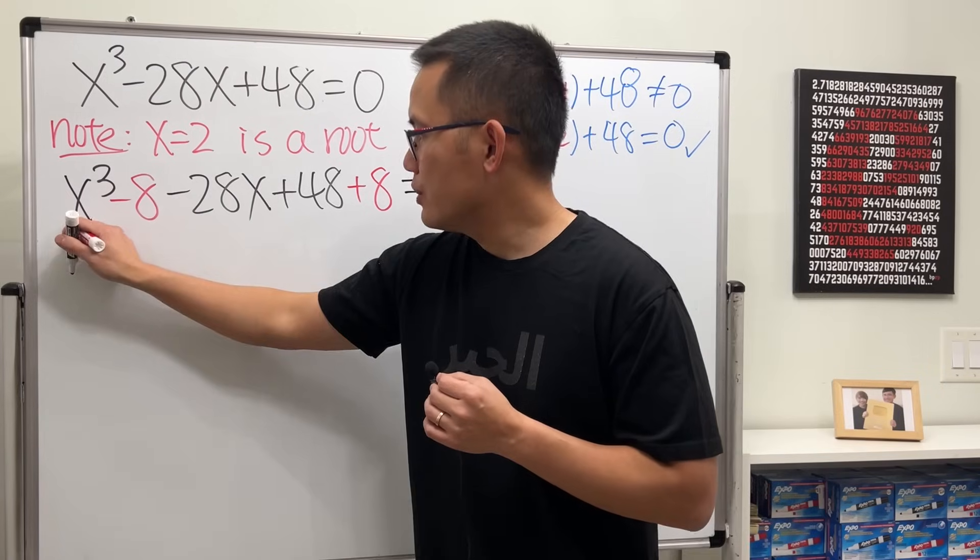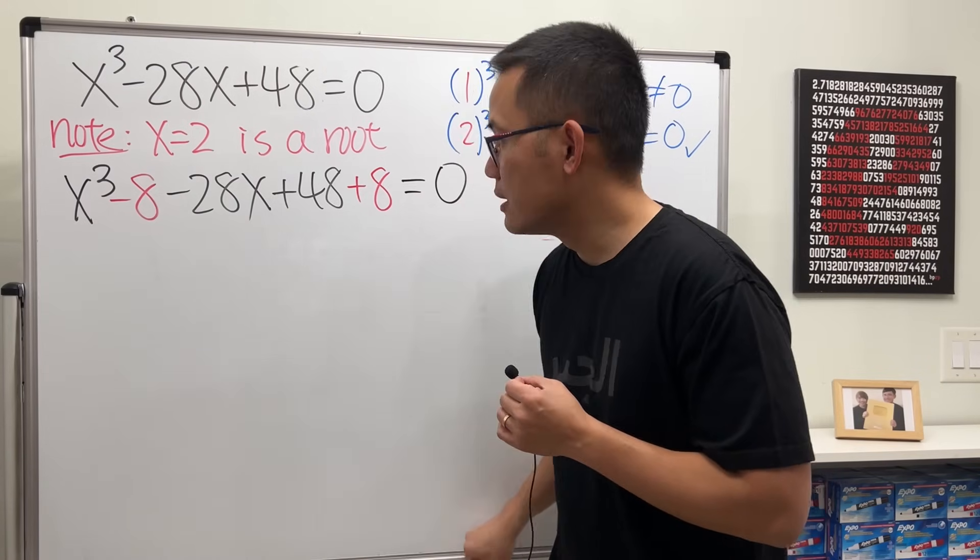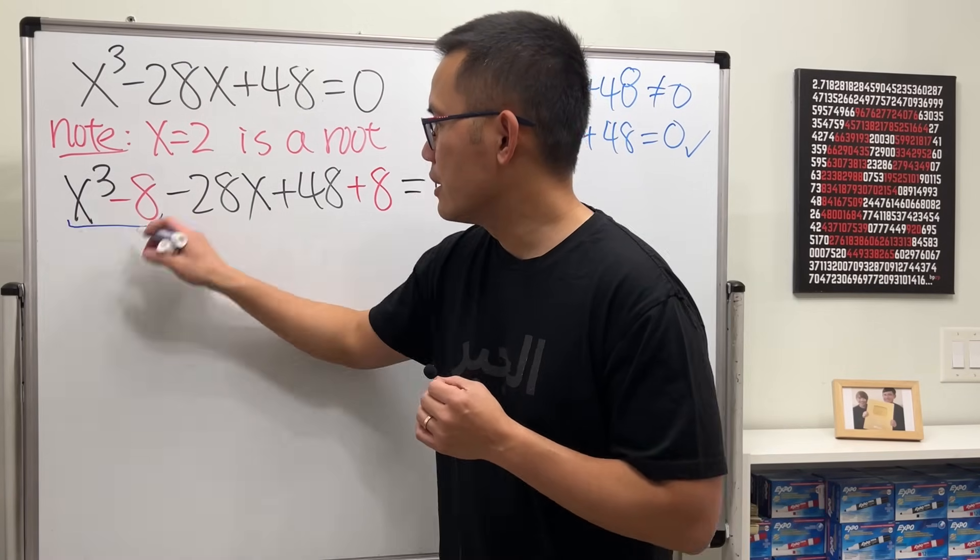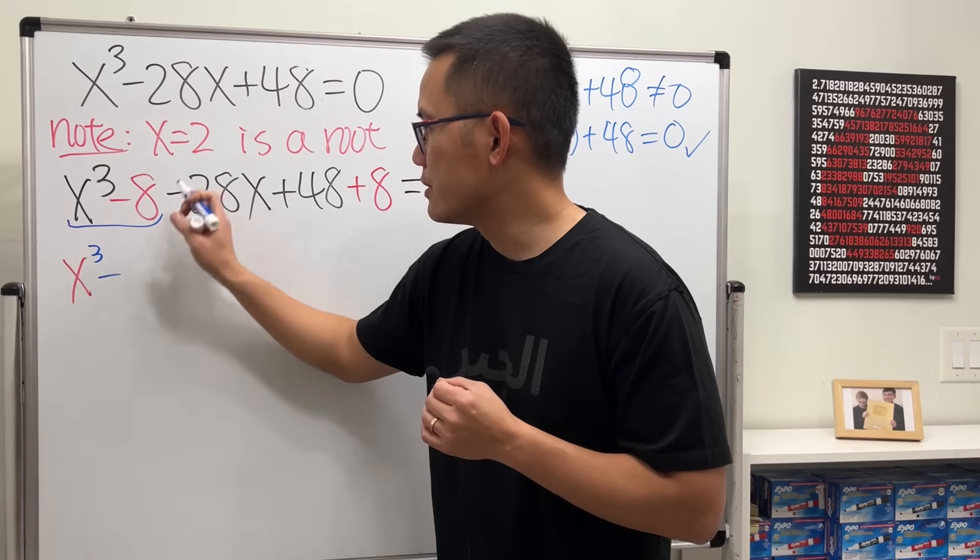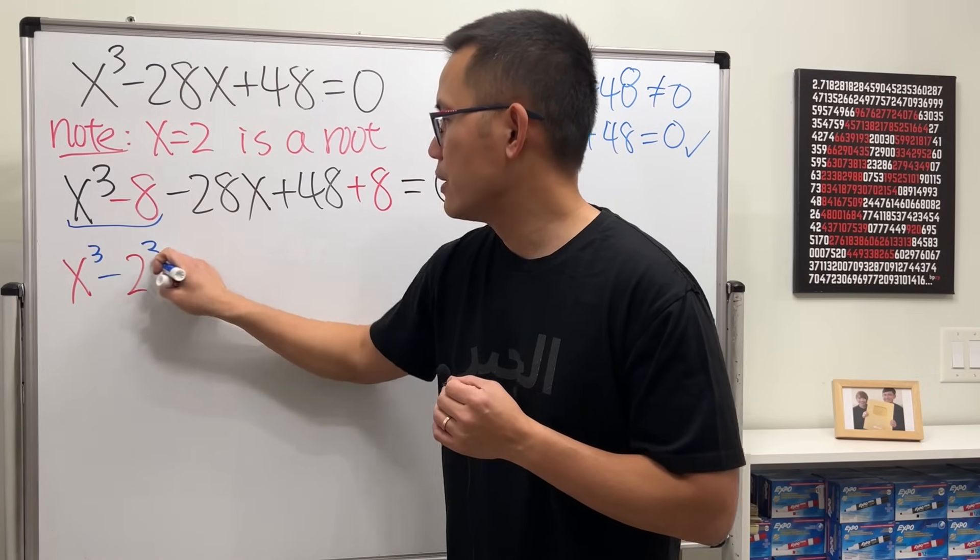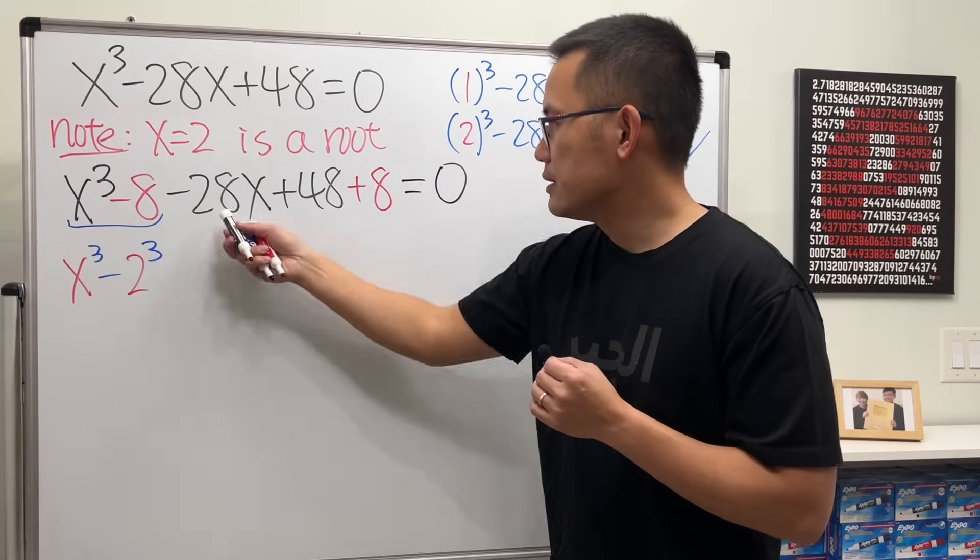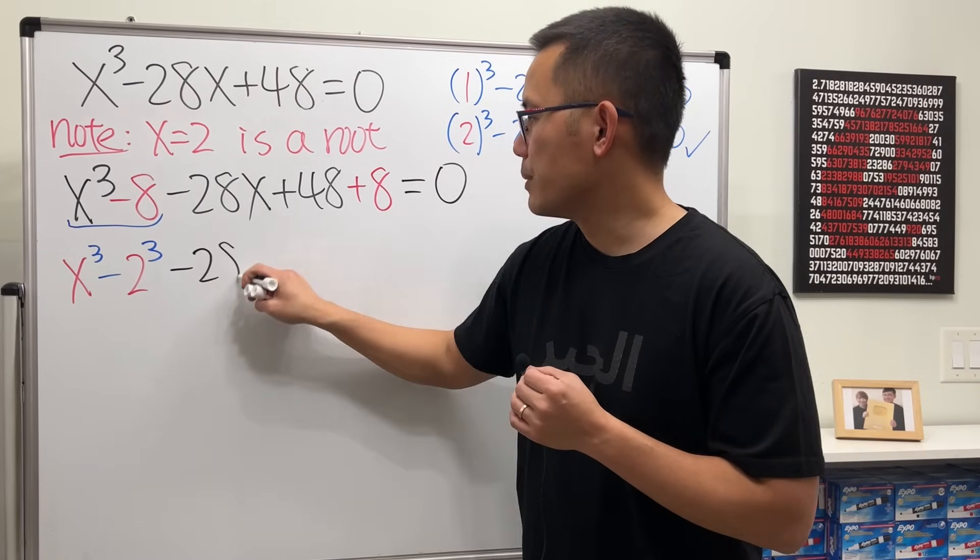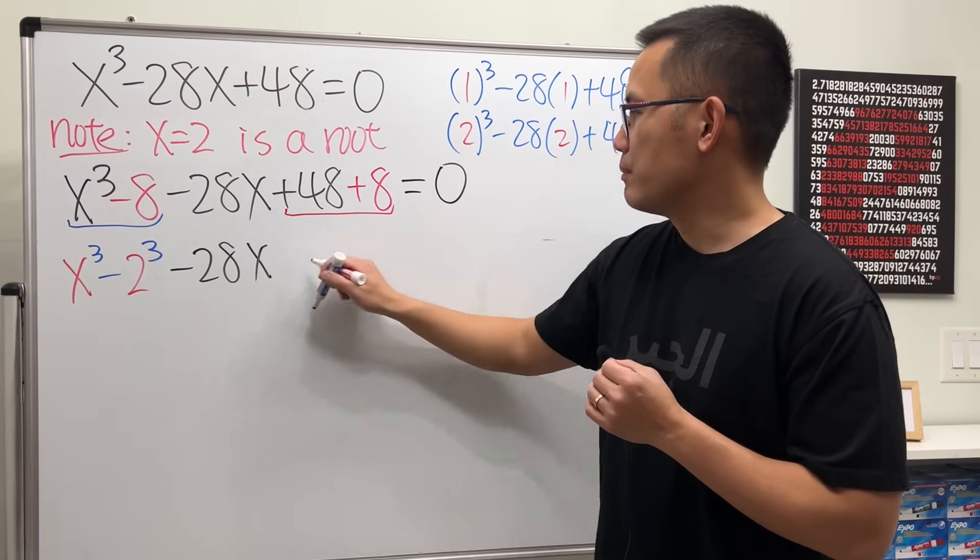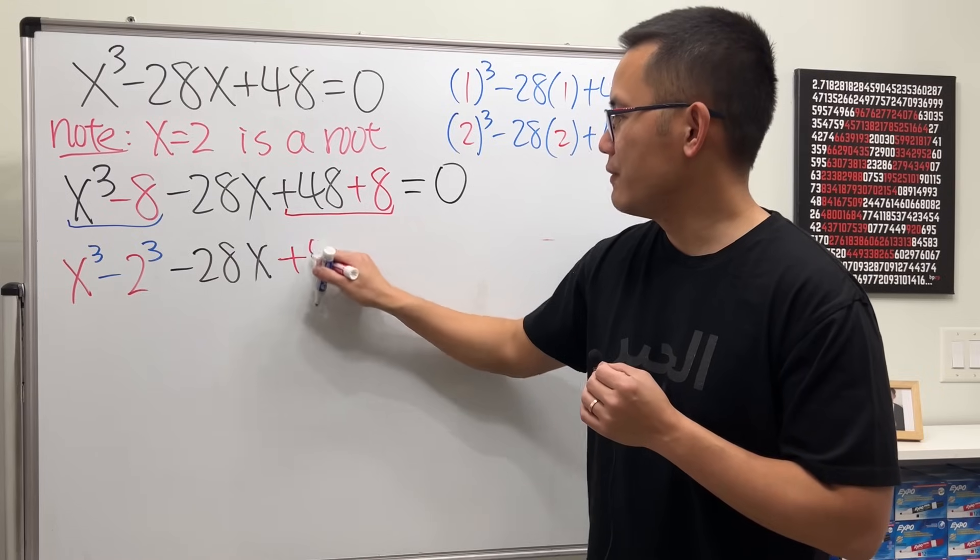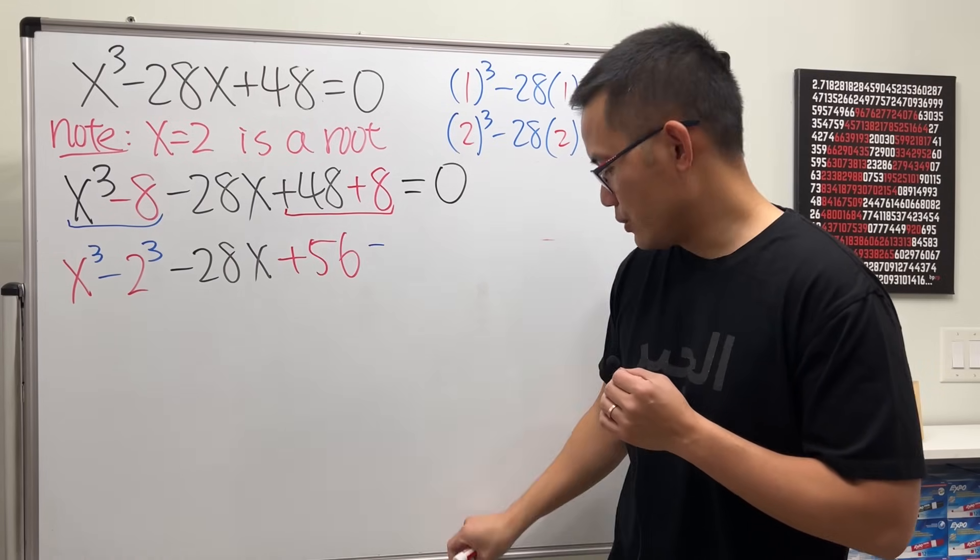Now pay attention to this part. This part right here is exactly what we are trying to do: the x³ minus 2³. Keep it for a little bit. And of course, we can combine 48 plus 8, which is 56, and that's equal to 0.